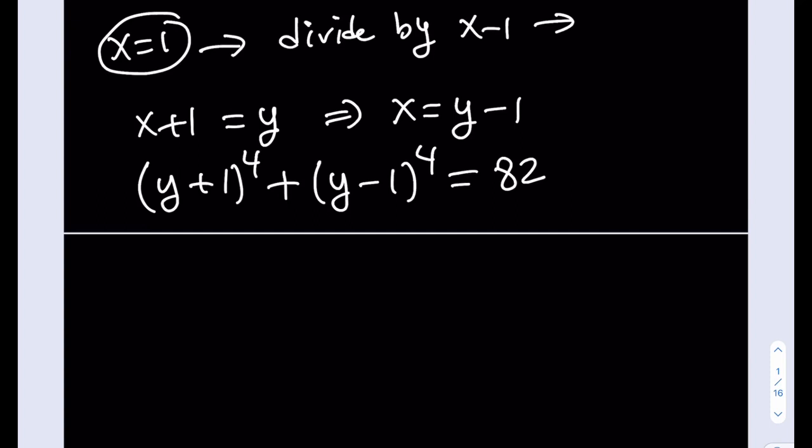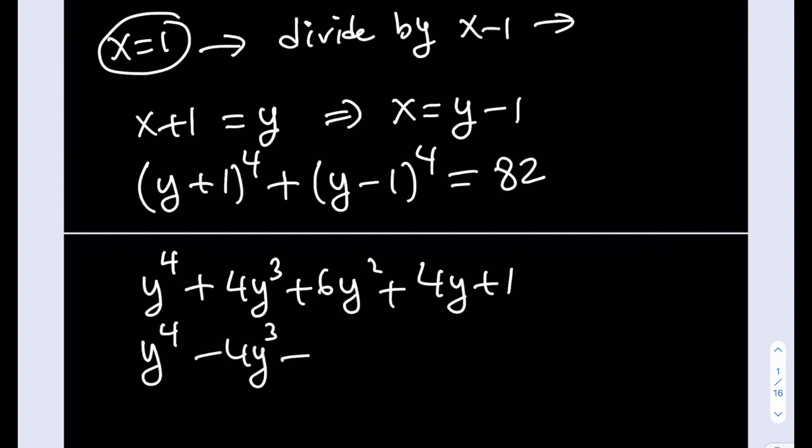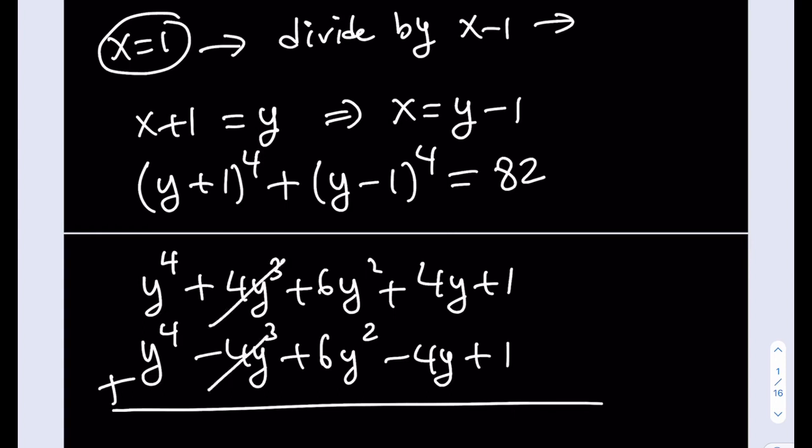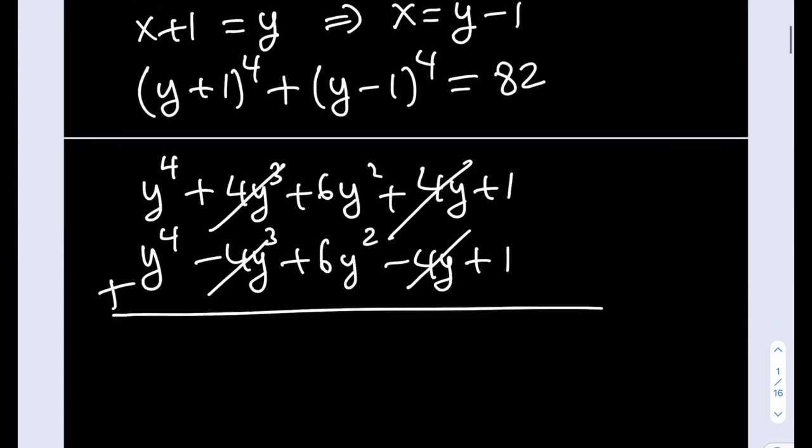Now what am I going to do? Let's go ahead and expand it. This one shouldn't be hard, same as the other one, but with smaller numbers. y to the fourth plus 4y cubed plus 6y squared plus 4y plus 1. And the other one is just going to be similar, except the sign is going to alternate. So it's going to be like plus, minus, plus, minus, and finally it's going to end with a plus. But notice what happens here. Something magical, something cool happens. These two terms cancel out. And these two terms cancel out. And we end up with 2y to the fourth plus 12y squared plus 2. And the whole thing is equal to 82.